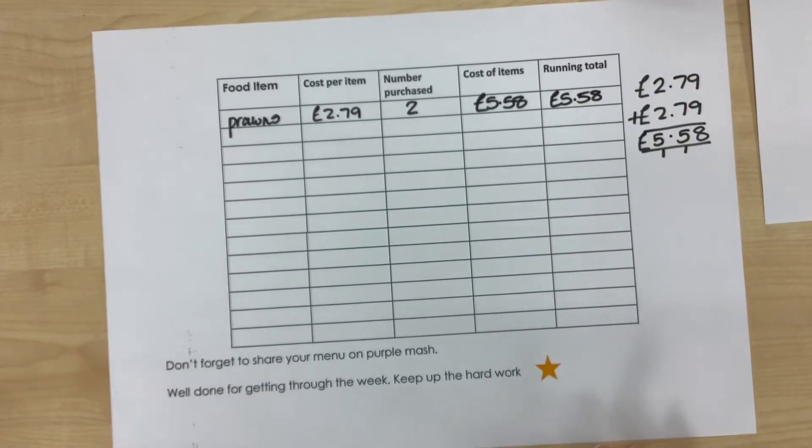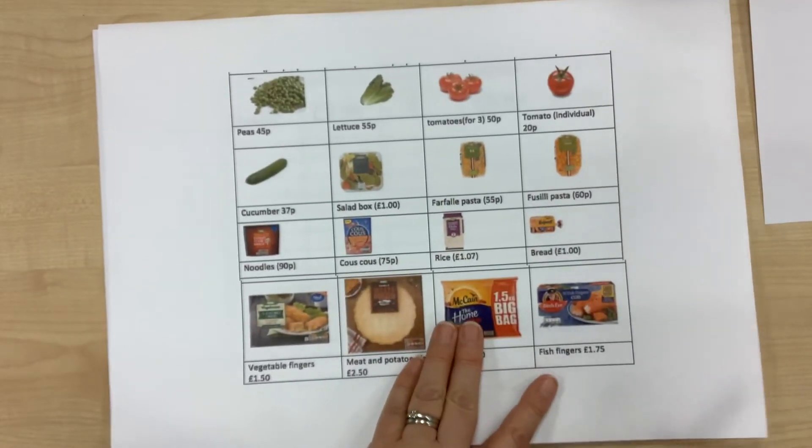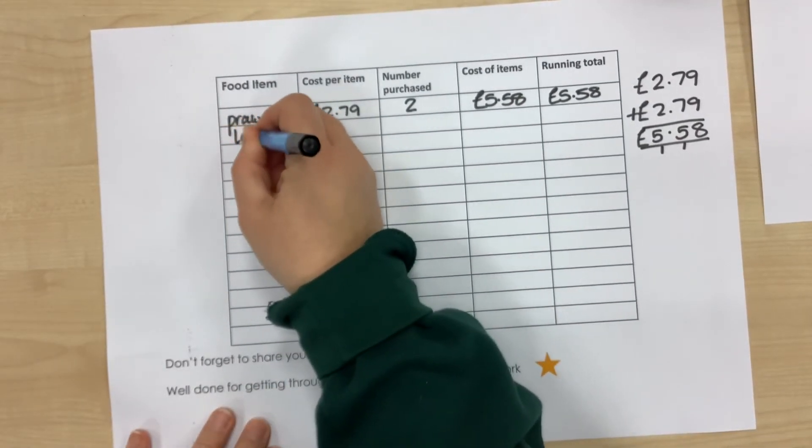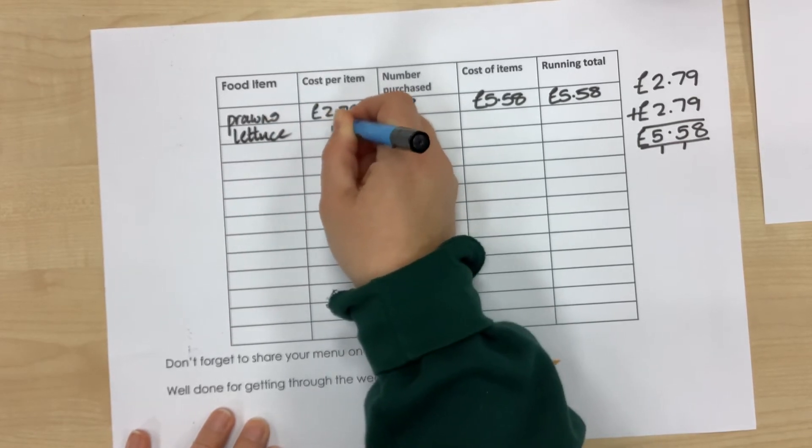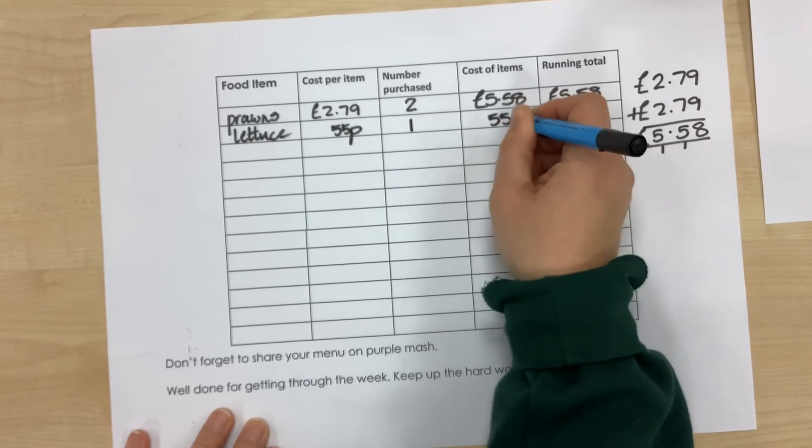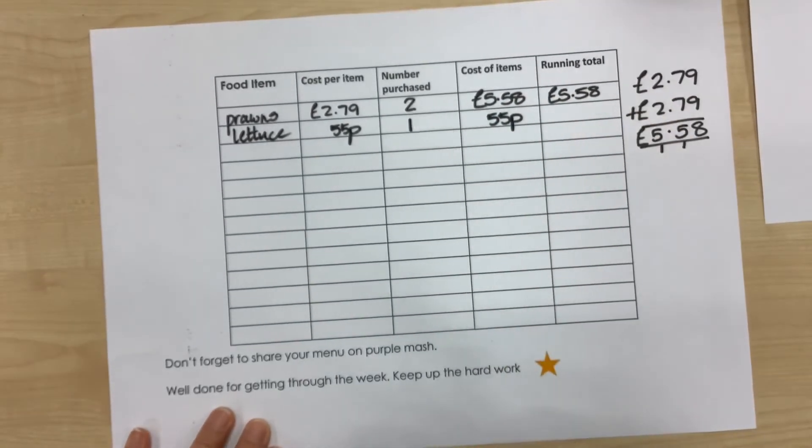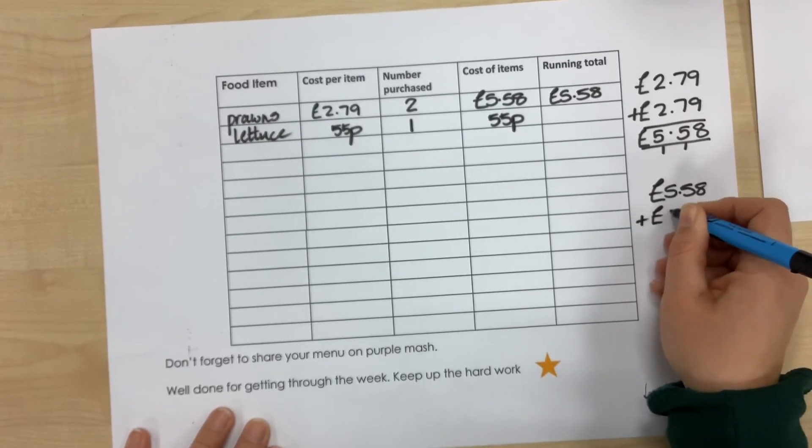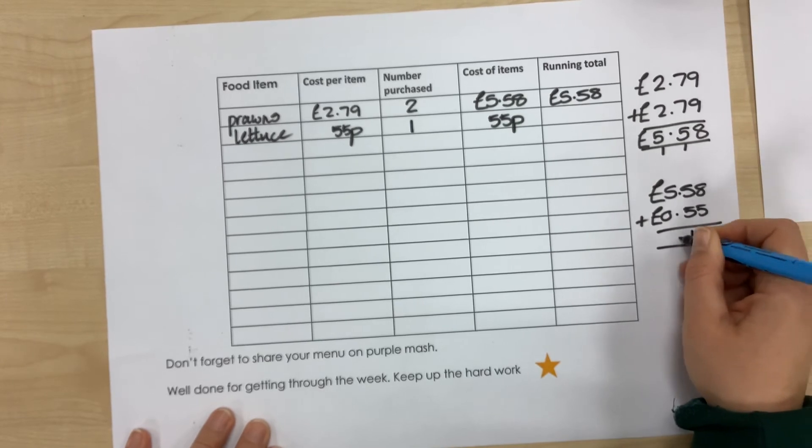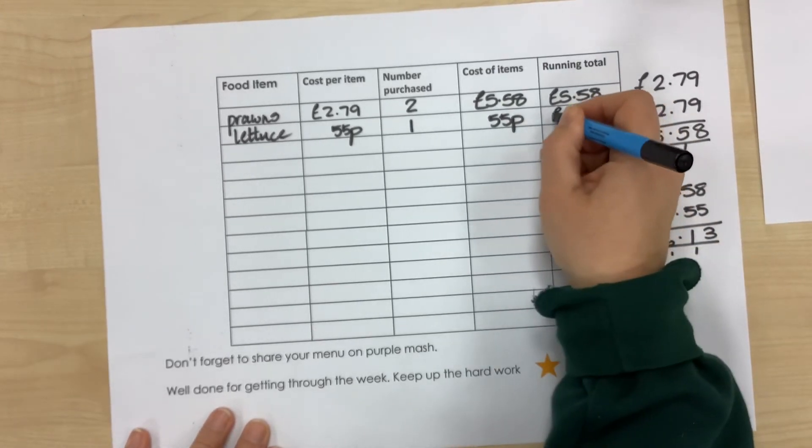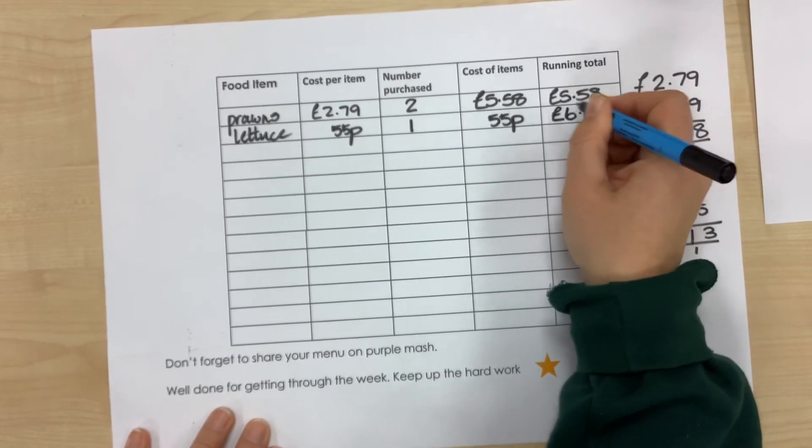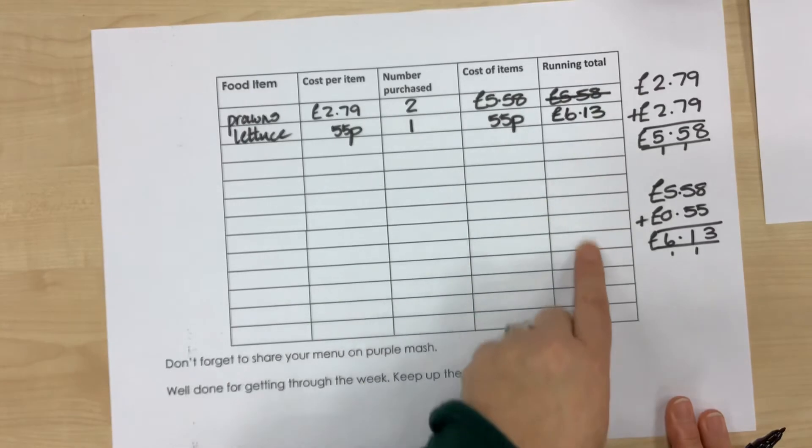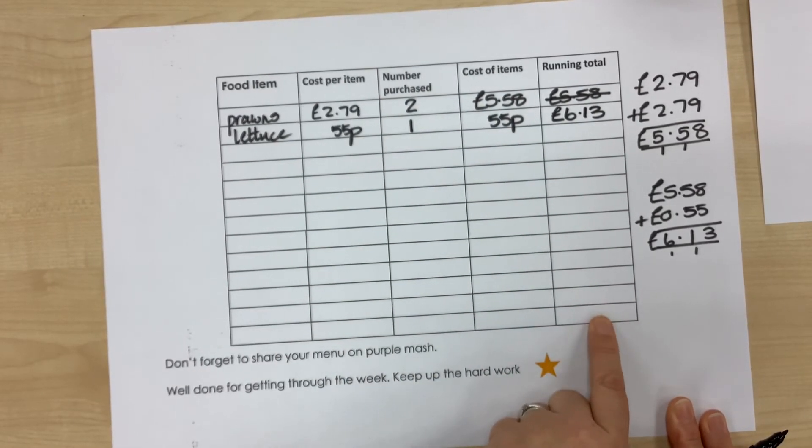I also need some lettuce to go with my prawn salad. So again, I'm going to go to the shop, and I can see that one lettuce is 55 pence. I think that looks like quite a good size of lettuce, so I'm only going to buy one lettuce. And that was 55 pence. So the cost of the items is still 55 pence. And now I'm going to add the 55 pence onto the £5.58. So again, you might be able to do that mentally, or you might want to do that as a column addition. I'm just going to check my answers by doing it in a column addition. So now my running total is £6.13. So I can score that one out because I'm up to £6.13 and so on. So by the time you have written everything that you need for your meal, you will have a total cost at the end in this column.